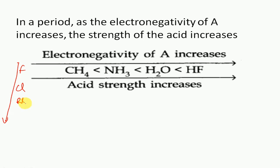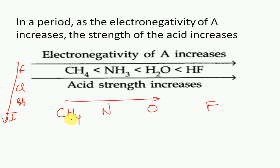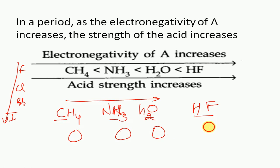If we talk about the period trend, consider carbon, nitrogen, oxygen, and fluorine — all forming bonds with hydrogen: CH4, NH3, H2O, and HF. Comparing the sizes here, carbon, nitrogen, oxygen, and fluorine all have almost similar size. So the size factor will not dominate here. Instead, we compare electronegativity.